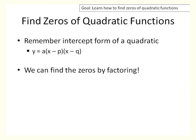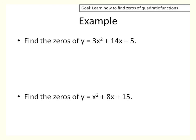If you're asked to find the zeros, that means the same thing as solving — you're looking for where the parabola crosses the x-axis, just without graphing. Ideally you want the equation in intercept form, which means factored. So if it says find the zeros, set y equal to 0 and factor. There's no greatest common factor here, so we're looking at 3x and x, and positive 5.